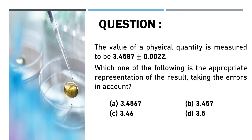Question. The value of a physical quantity is measured to be 3.4587 plus or minus 0.0022. Which one of the following is the appropriate representation of the result, taking the errors into account?